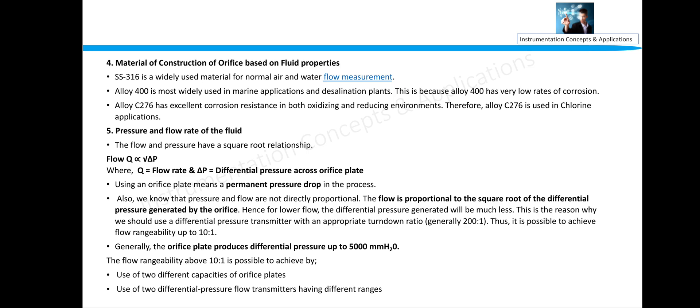We should see the range ability also. If the transmitter range ability is 100 is to 1, then the flow range ability will be 10 is to 1. So we should use a differential transmitter with an appropriate turn down ratio, generally 200 is to 1. Thus it is possible to achieve a flow range ability of 20 is to 1 or 10 is to 1 accordingly.